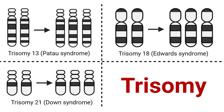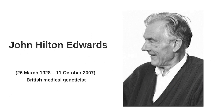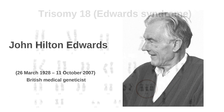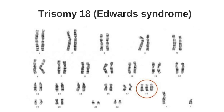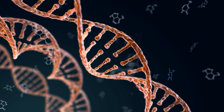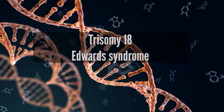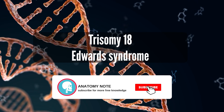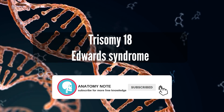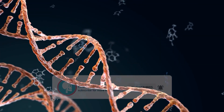Trisomy 18, also known as Edwards syndrome, named after the British physician John Hilton Edwards who first described the condition in 1960, is a genetic condition characterized by the presence of an extra chromosome 18 in some or all of the body's cells. This additional genetic material disrupts normal development, leading to a range of physical and intellectual disabilities.